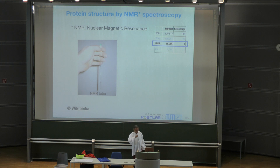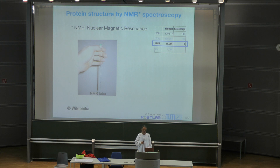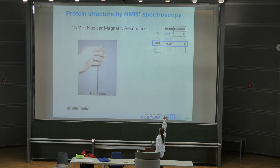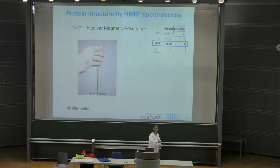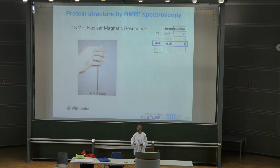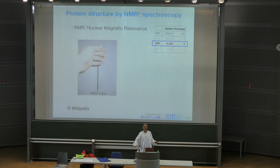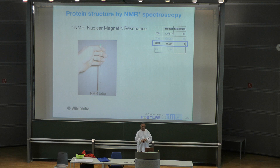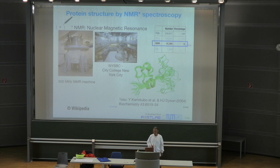Now we get to the next technology, which begins with NMR spectroscopy — nuclear magnetic resonance. Roughly at this point, 10% of all the structures. The beauty is, you take the protein out of its natural environment, put it in a tube, and you put the tube into a magnet. You don't do any manipulation, you're not growing a crystal, you're not changing anything. You just take the protein in its native environment.